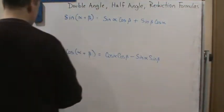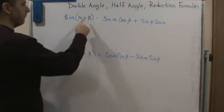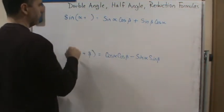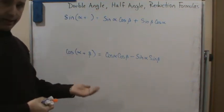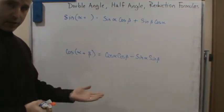So if we do that, for example, if we say alpha is equal to beta, then we can easily derive these two formulas. I'm not going to do all of the ones, but the other ones, like for the double angle for tangent, is done similarly.